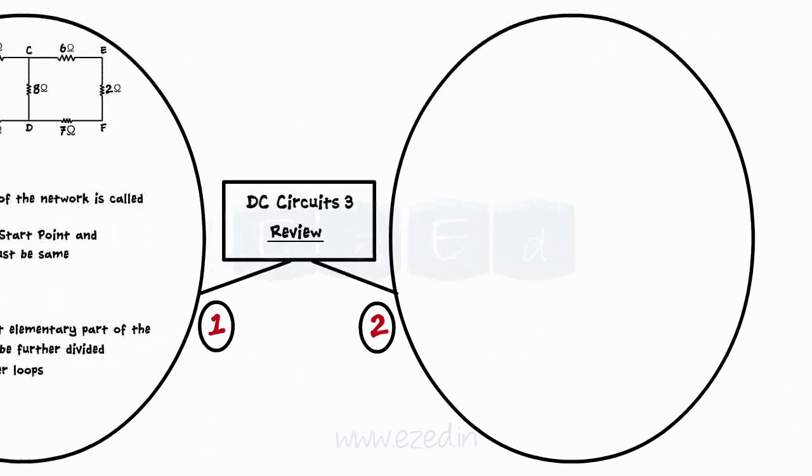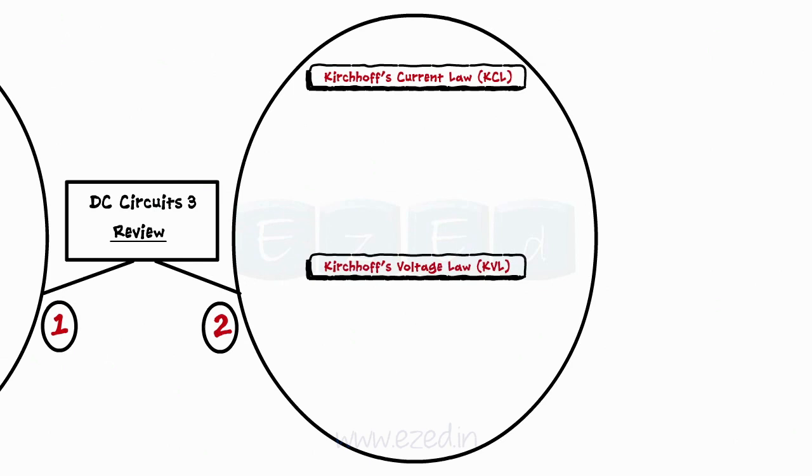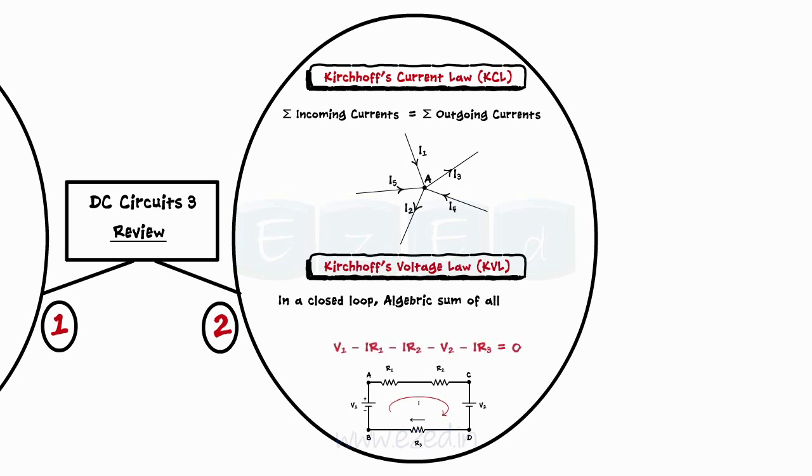Kirchhoff's current and voltage laws help us in the analysis of the DC circuits. KCL states that the sum of all incoming currents at any node of the circuit always equals sum of all outgoing currents. And KVL states that in any closed circuit or mesh, the algebraic sum of all voltage sources and voltage drops is 0.